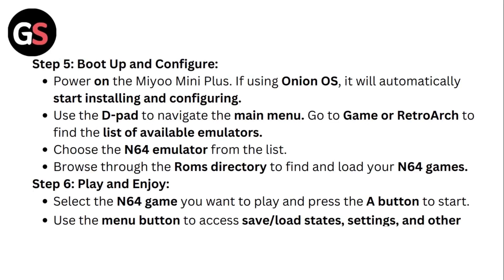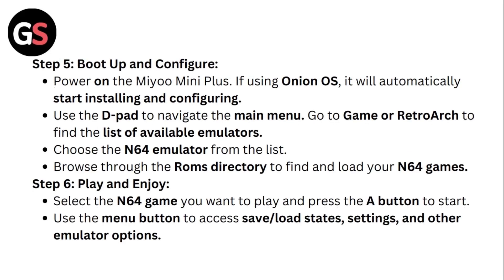Step 5: Boot up and configure. Power on the Miyoo Mini Plus — if using Onion OS, it will automatically start installing and configuring. Use the D-pad to navigate the main menu, go to the Game or RetroArch section to find the list of available emulators, and choose the N64 emulator from the list.